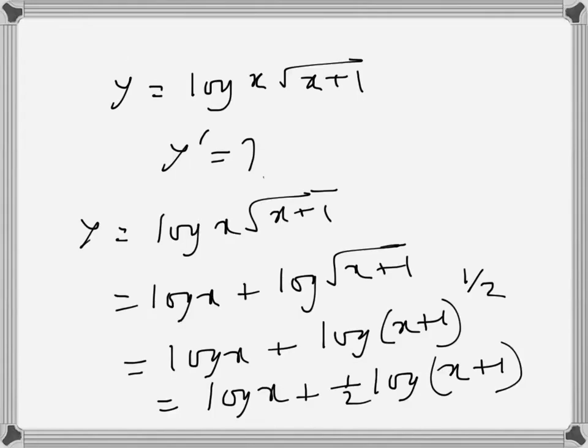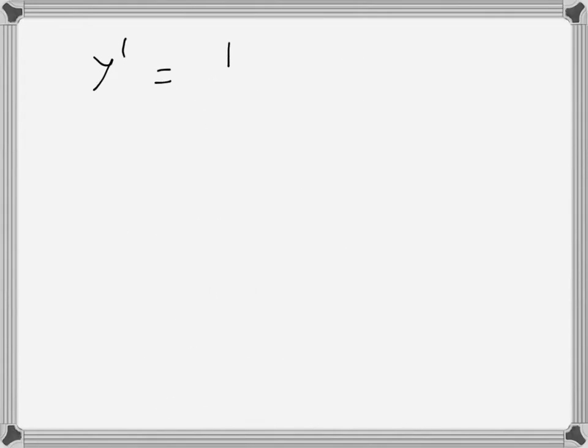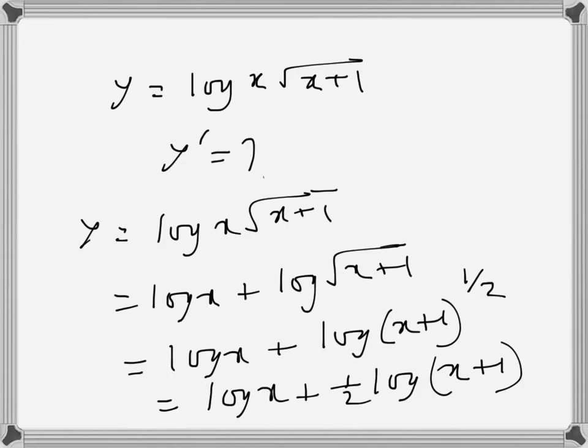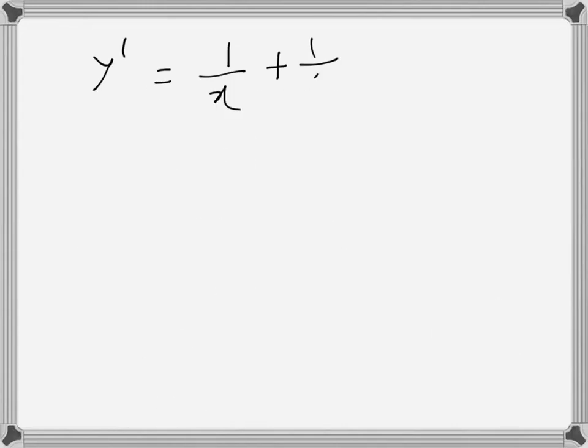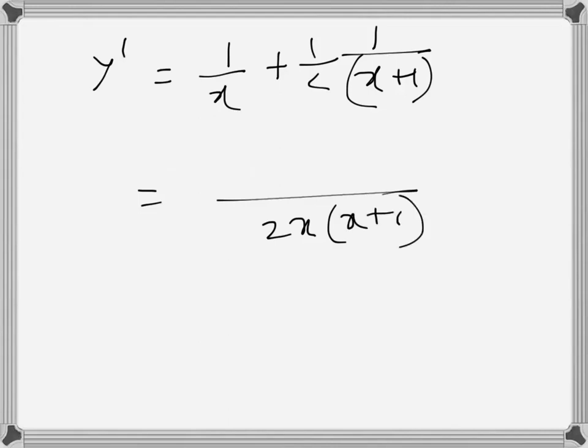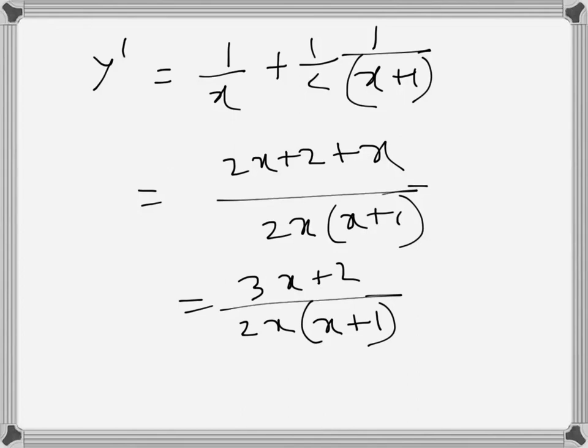This one, log x, the differentiation is 1 over x, and this is half 1 over x plus 1. So x plus 1 there, twice x plus 2 plus x, which is 3x plus 2, and then 2x times x plus 1. Or we can leave it like that, whatever. So this is the differentiation.